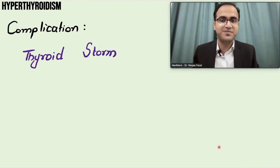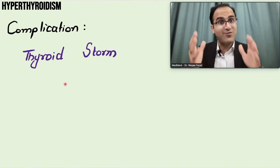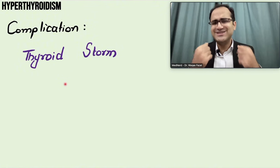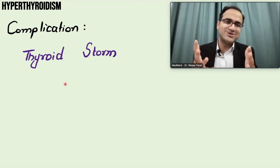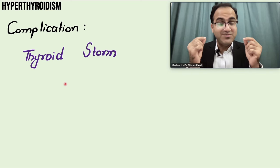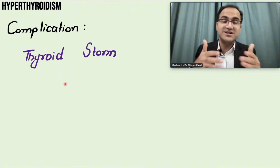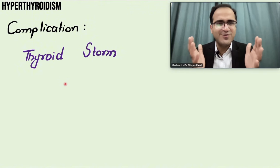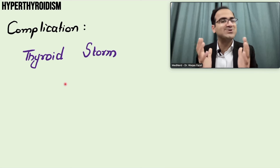Complications of hyperthyroidism include thyroid storm, a very serious complication. Thyrotoxicosis and thyroid storm are covered in detail in a separate video in the emergency medicine playlist, which contains videos on different emergencies and their treatments.